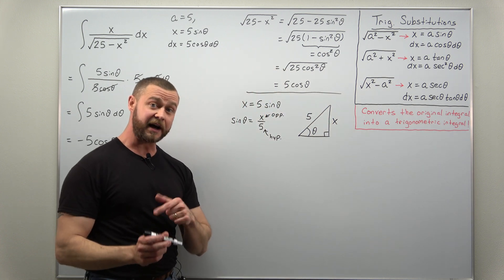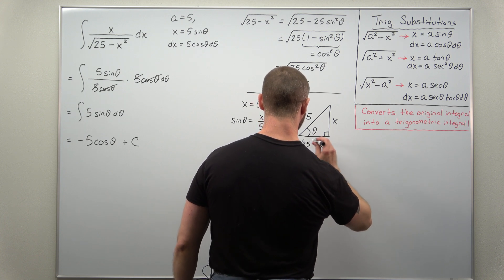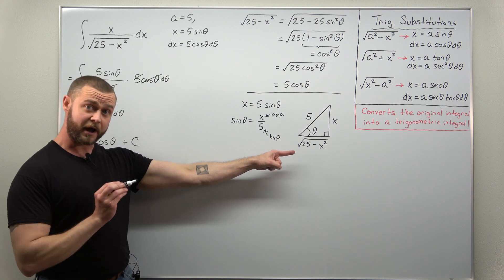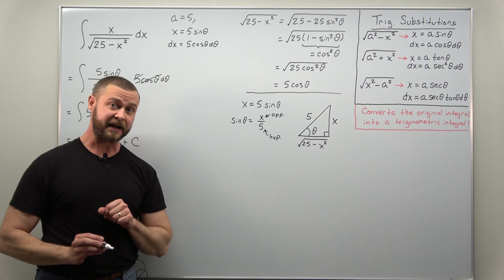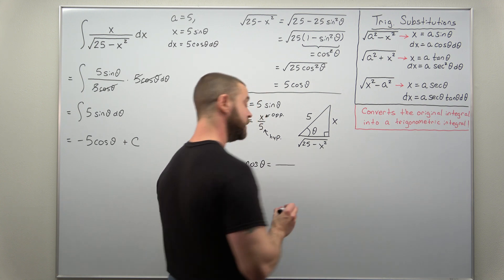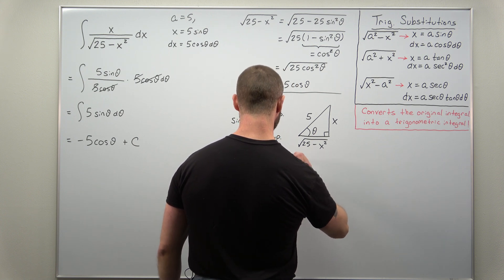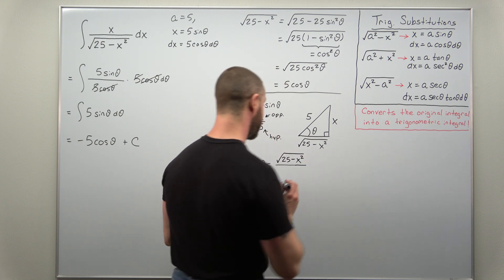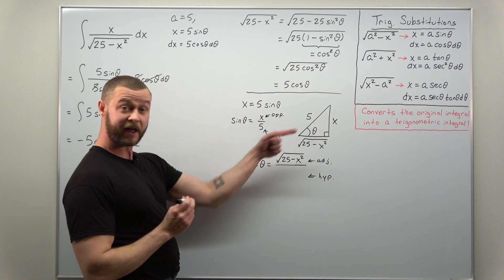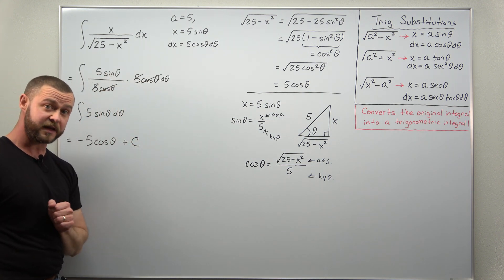Always work out the third side using the Pythagorean theorem — and no coincidence, it comes out to the square root of 25 minus x squared. Now we use this conversion triangle to find cosine of theta in terms of x. Using SOH-CAH-TOA, cosine of theta equals the adjacent side divided by the hypotenuse, so cosine of theta equals the square root of 25 minus x squared, all divided by 5.